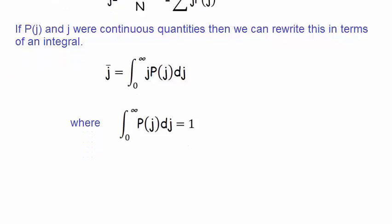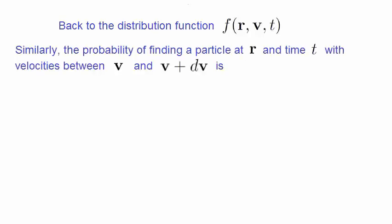Let's now turn our attention back to the distribution function. We've stated before that it can be viewed as a probability function. Say we want to find the probability of a particle at position r and time t with velocities between v and v plus dv. This can be obtained by multiplying the normalized distribution function by dv.